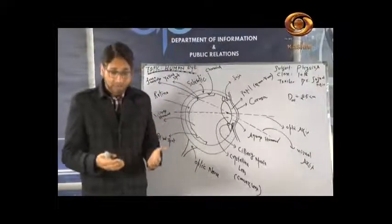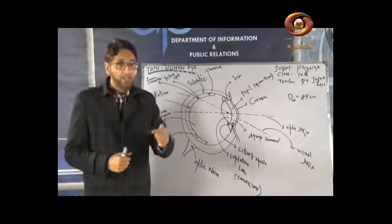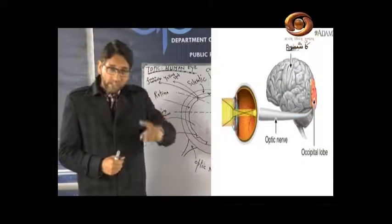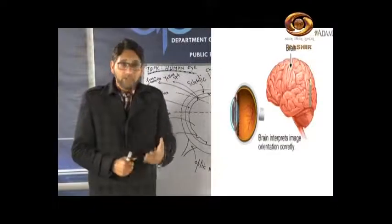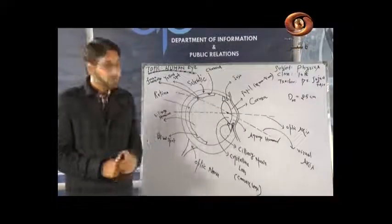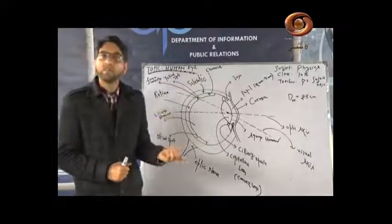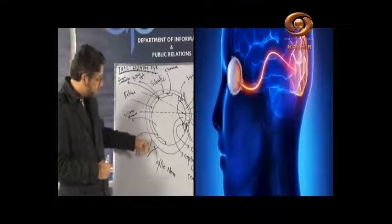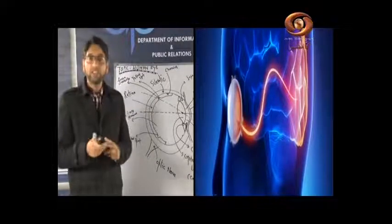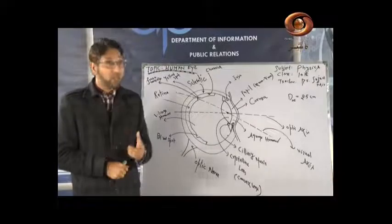The nerves in the retina work like electrical wires — they carry optical information. The image formed on the retina is sent via the optic nerve to the brain. Now, since the lens is a convex lens, the image formed on the retina is real but inverted. However, the brain processes this inverted image and perceives it as erect, which is why we see things the right way up.